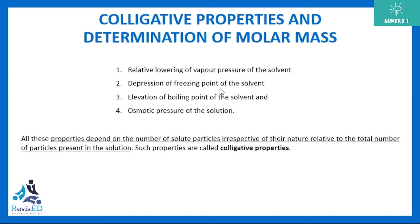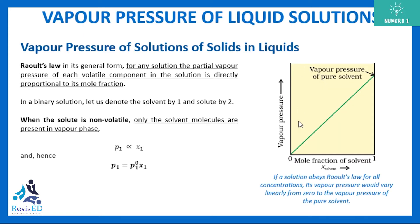Let's focus on the first property: relative lowering of vapor pressure. From the last session, we discussed the graph showing vapor pressure versus mole fraction. Whenever you add a non-volatile solute, the vapor pressure decreases — this was given by Raoult's law: p1 = p1° × x1.